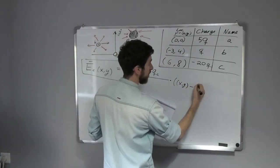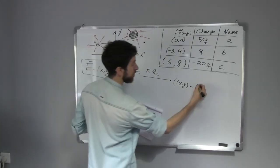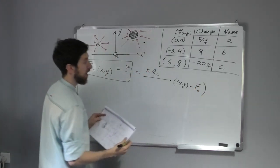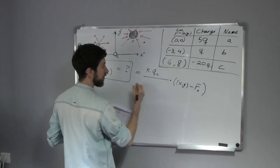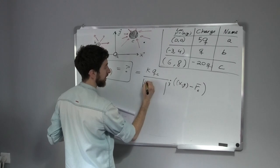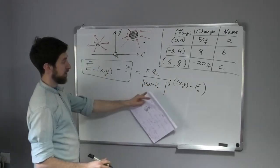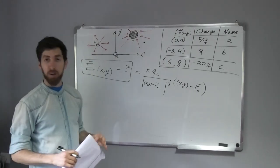...minus the location of the particle that generates this electric field. In our case, I'll see here it's going to be the same thing but in magnitude to the third: (x, y) minus r_C. That's it, perfect. So let's calculate it.